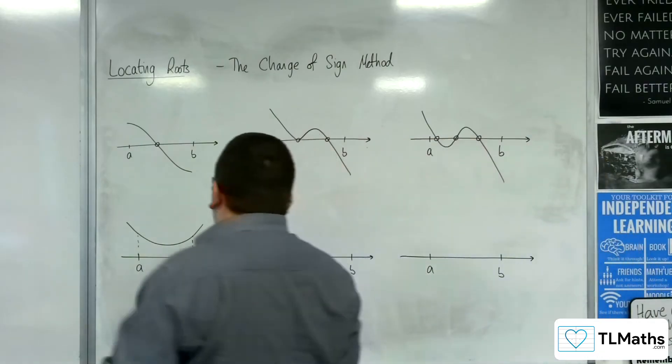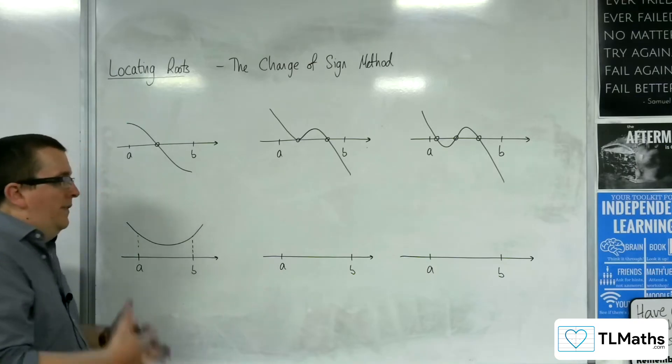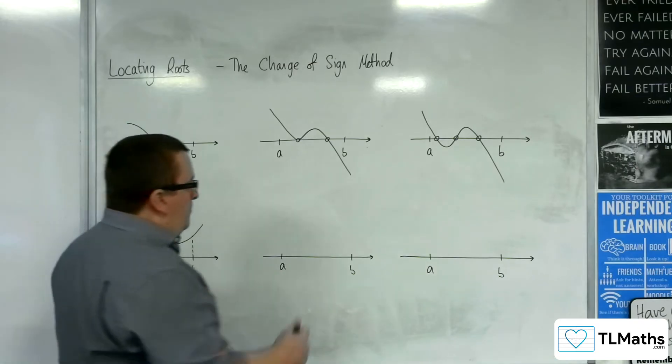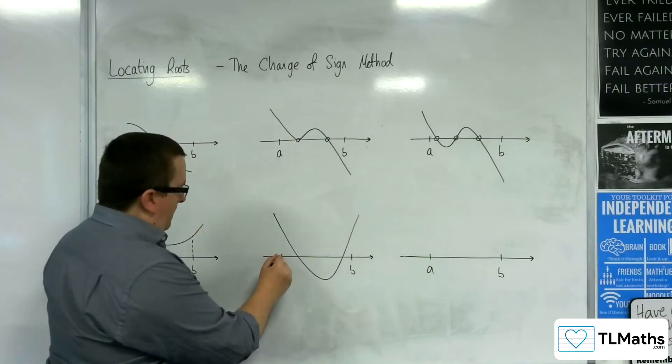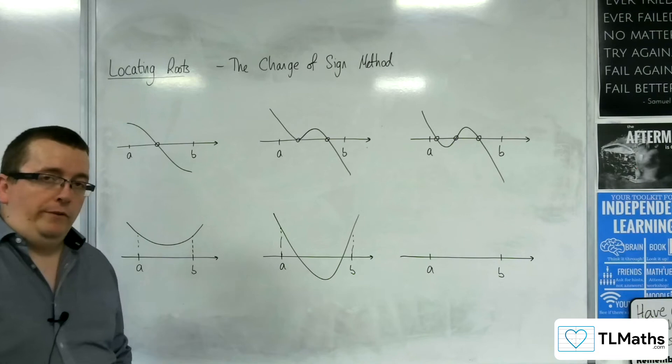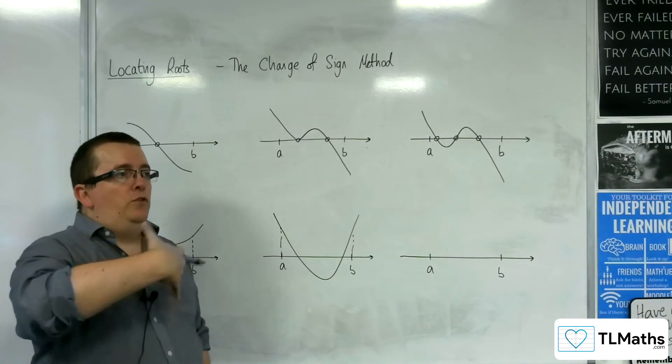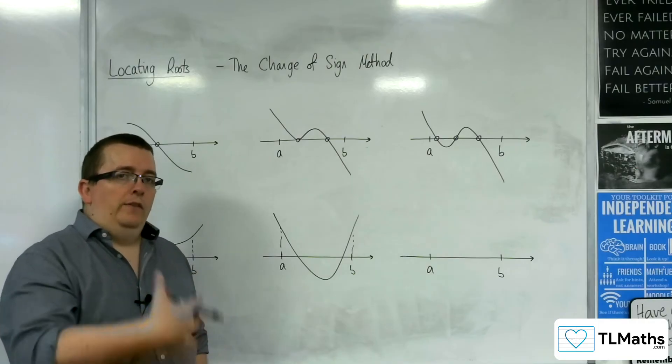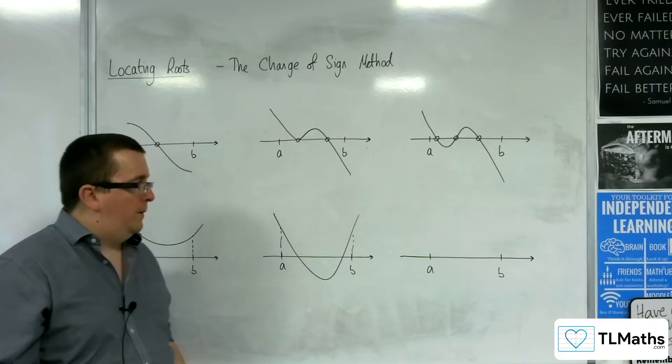You could have that the curve is continuous. There is no change of sign, but there are roots. Like that. Now, both of them positive, the curve is continuous, but there are roots. So it's not saying that if you don't have one of those things that there are no roots. It's just that you don't know.